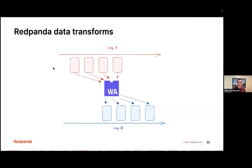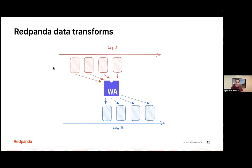For data transforms — you have these individual records within the log that get written by clients, and WebAssembly is something that will pull from one log, do some transformation, and then write different records into a separate log as a background process. This gives you the ability to write data in a different format, strip out PII, or do data scrubbing. There are a bunch of very common use cases within big streaming distributed systems for these simple, straightforward tasks.